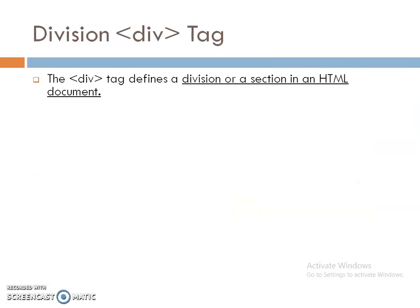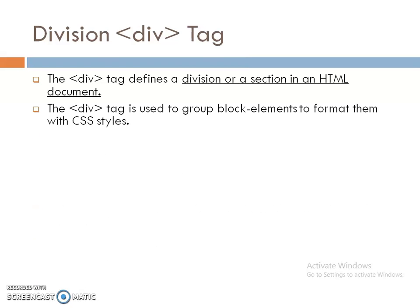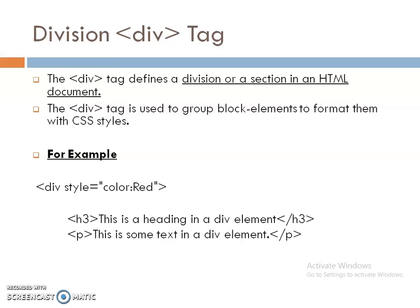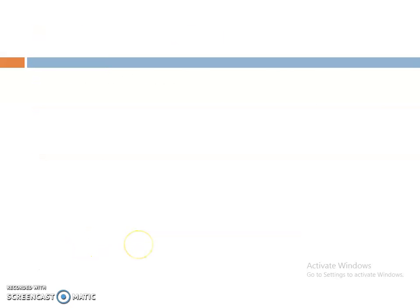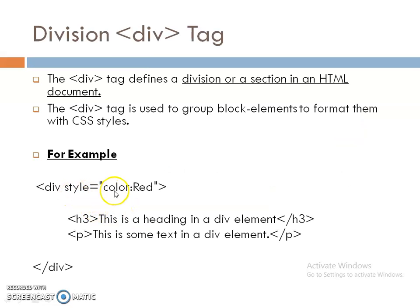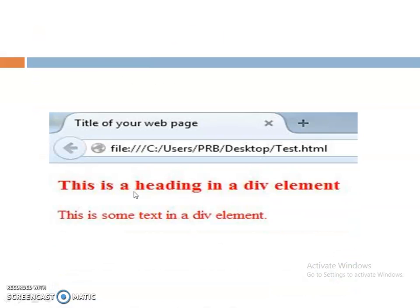Now the division tag. The division tag is used to define a division or block of statements — you can consider it a section in an HTML document. It is used to group a block of elements for formatting with a stylesheet. Here I am using the div tag with the style attribute, applying formatting to a particular style. This is my block of statements: my first statement is a heading statement and the second is a paragraph. The output shows the heading and the simple statement in red color, because we applied the color property as red.